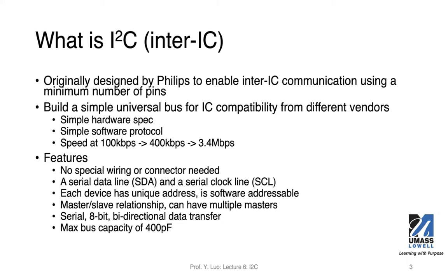Using I²C, we can build a very simple universal bus for different ICs from different vendors. The hardware specification of this protocol is very simple, and even if you implement it in software, it's still possible. The operation speed of the bus is 100 kilobits per second or 400 kilobits per second for most ICs. For newer ones, they can support 3.4 megabits per second.